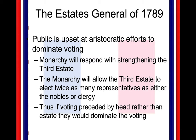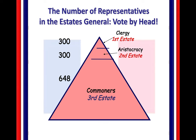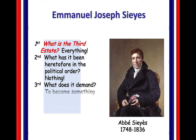The clergy has 300 representatives, the aristocracy has 300 representatives, and the third estate has 648. If they vote by number of representatives, the third estate would have a lot of power and could overrule the other two. There was a huge disagreement on how to vote, fraying relationships before they even got started. Tensions are high, there's not a lot of trust. Sieyès, an important figure within the third estate, summarized it with this famous saying: 'What is the third estate? It is everything. What has it been in the political order? Nothing. What does it demand? To become something.'